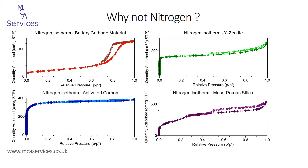Using nitrogen means that we can measure the full adsorption and desorption isotherms and apply a wide range of pore models to investigate pore size distributions, pore volume, as well as the surface area. They're all critical to fully understanding the porous nature of many materials. These isotherms look very different because these materials have very different porous characteristics, but they do have one thing in common: quite a high surface area.